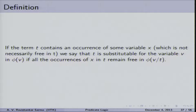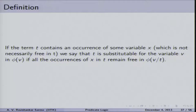If the term T contains an occurrence of some variable X, we say T is substitutable for variable V in phi(V) if all occurrences of X in T remain free in phi. This is represented as phi[V/T], as discussed earlier.